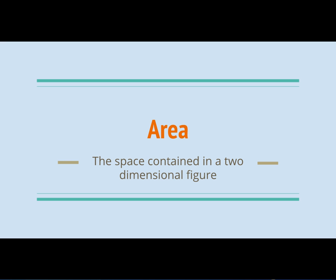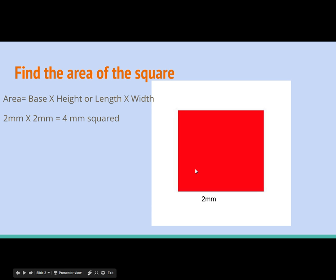Area is the space contained in a two-dimensional figure. Here's an example. We have a two-dimensional figure here. We have a height and we have a base. We can also call this a length and a width.